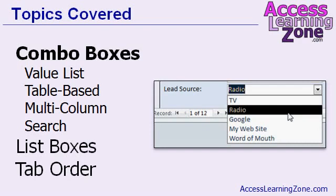Today's class is going to focus primarily on combo boxes. Combo boxes go by many different names — some people call them drop-down boxes, some people call them pick lists. Whatever you call them, it allows the user to select from a list of values. We'll start off by learning about value list combo boxes, where you type in a list of values right into the combo box that the user can pick from.